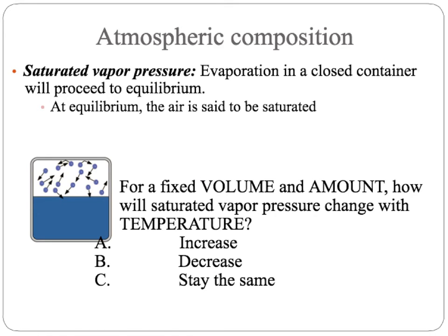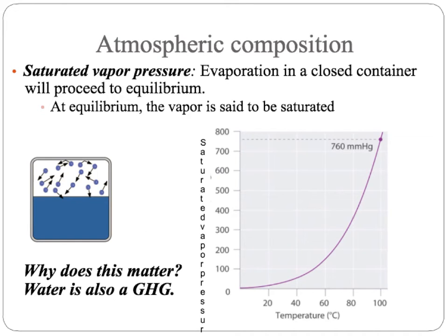The concept we use to talk about this is saturated vapor pressure. If you have water in a closed container, it will evaporate until it hits an equilibrium — no more water vapor goes into the air at equilibrium, and at this point the air is said to be saturated. For a fixed volume and amount, how will saturated vapor pressure change with temperature as it increases? This figure shows how it changes: as you increase temperature along the x-axis, you get increasing saturated vapor pressure on the y-axis.